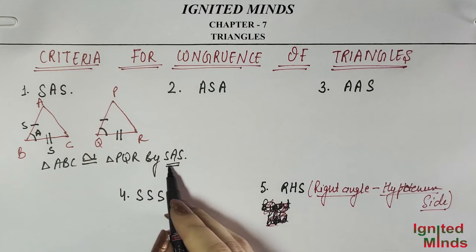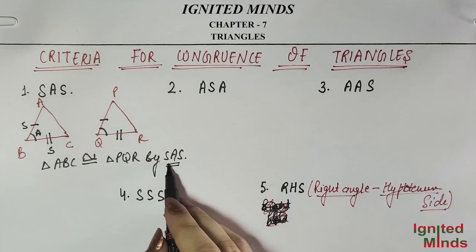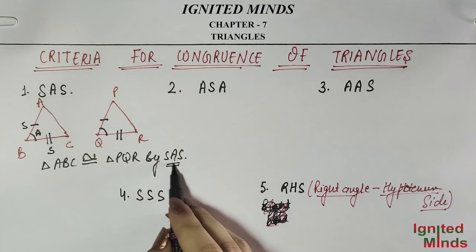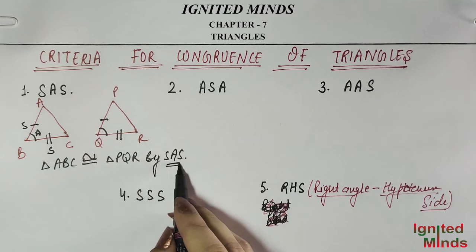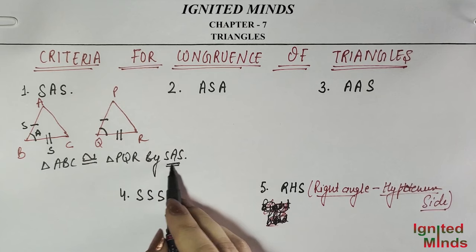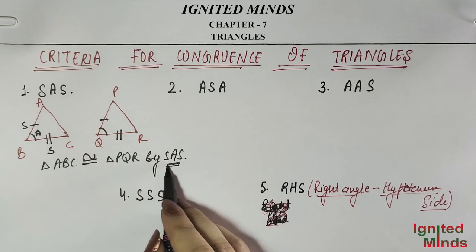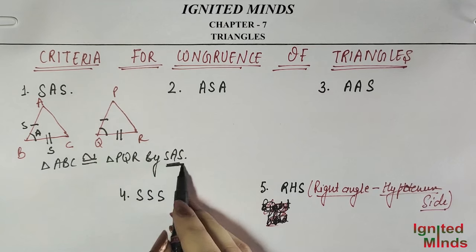So this means: if we have two triangles and any two sides and the included angle of one triangle are equal to the corresponding two sides and included angle of the other, we can say the two triangles will be congruent by SAS criteria.